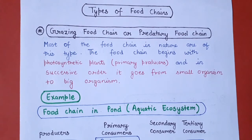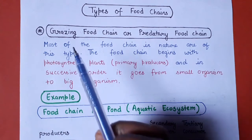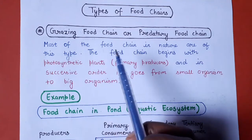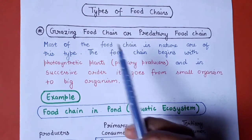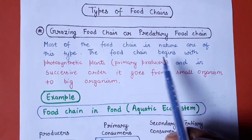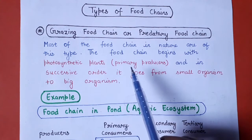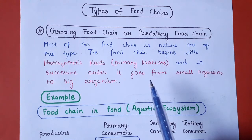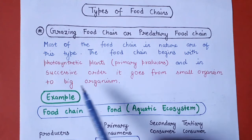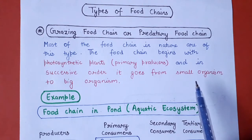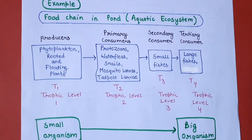Ab hum baat karte hain types of food chain ki, detailed examples ke saath. Pehla type humara hai grazing food chain, jise hum predatory food chain bhi kehte hain. Majority of food chains in nature are grazing food chains. Yahaan par jo food chain hai woh shuru hoti hai photosynthetic plants se, jo ki hamare primary producers hain, aur energy ka flow chhote organism se bade organism ki taraf hota hai.